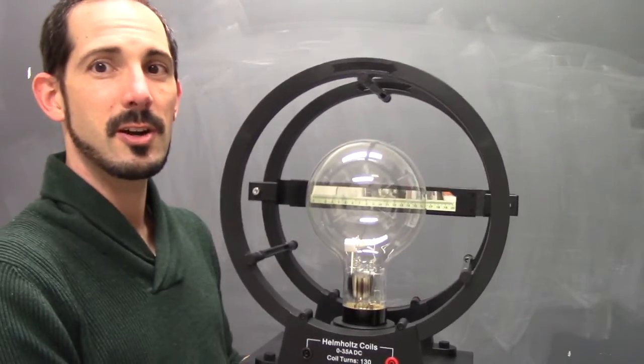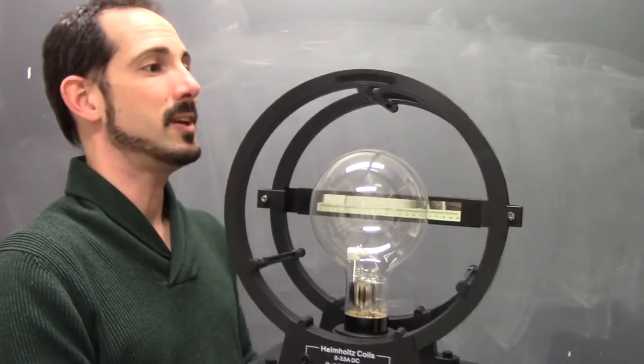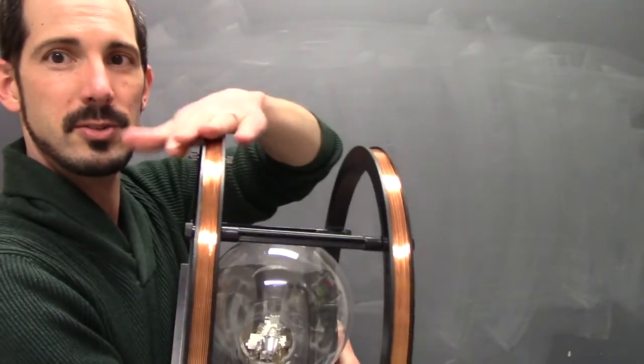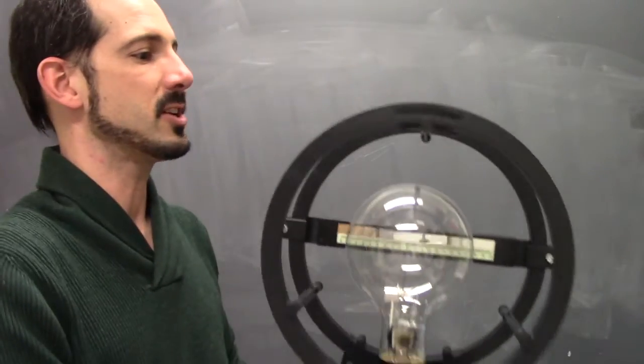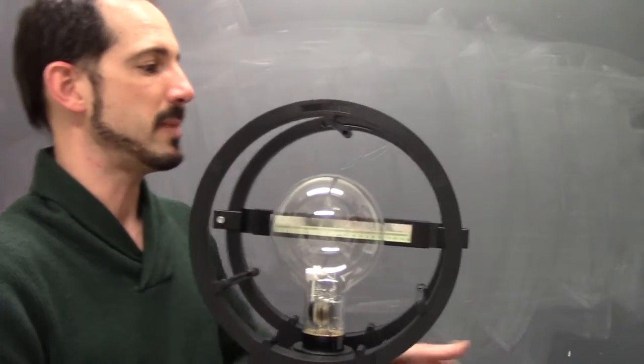Now, in order to get these charges to curve, we're going to need a magnetic field, and that's what these two coils are going to do. Helmholtz coils, it's just a coil of wire wrapped around a bunch of times, you send a current through it, and it's going to produce a magnetic field.